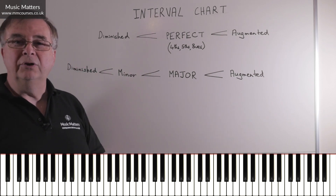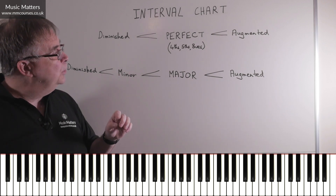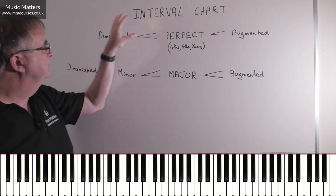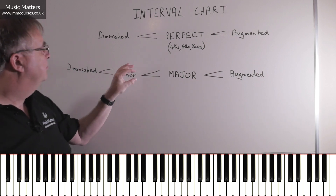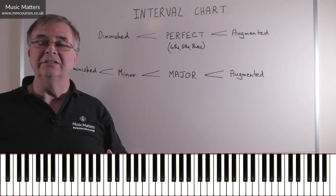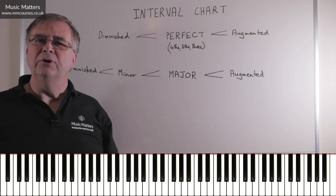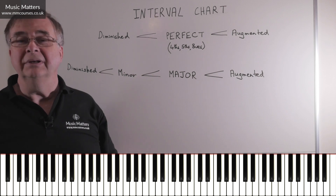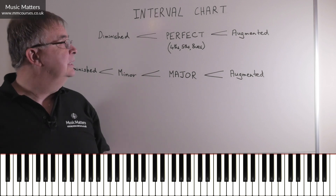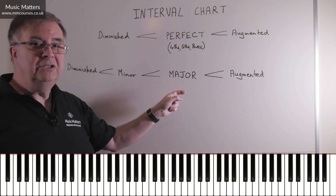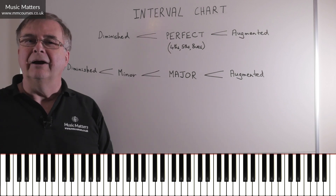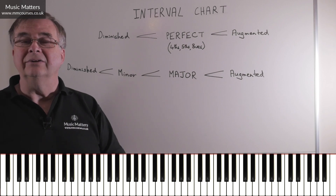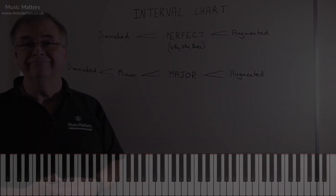That's the use of this interval chart. It's a great idea — if you go into a theory exam, you could very quickly write out that chart: perfect, major; augmented, diminished; augmented, minor, diminished. When you're calculating intervals, you can just use that chart. The few seconds it takes to write it down will be regained with extra bonus time from having it there to help you. It also makes sure you don't muddle up perfect with major, or get minor involved where it doesn't belong — it clarifies all of that for you.